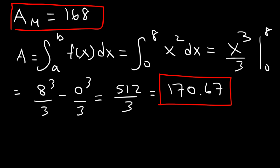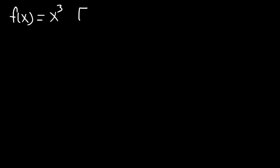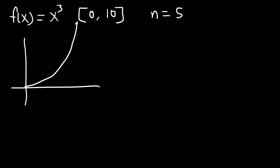Now let's try another example. We have the function x to the third power, and we want to estimate the area under the curve over the closed interval 0 to 10 using 5 rectangles — 5 subintervals. Use the midpoint rule first, then calculate the definite integral from 0 to 10 to see if the answers are close. The graph of x cubed has a similar shape to x squared but rises faster.